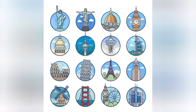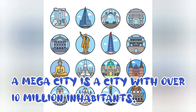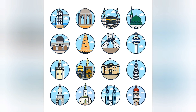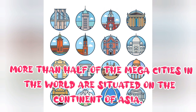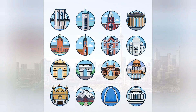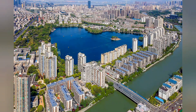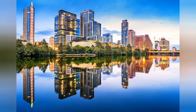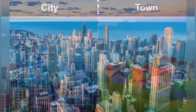What is a mega city? A mega city is a city with over 10 million inhabitants. Since Asia is the largest continent, more than half of the mega cities in the world are situated on the continent of Asia. Which mega cities have you visited and which cities would you love to visit in the future? Please let us know.